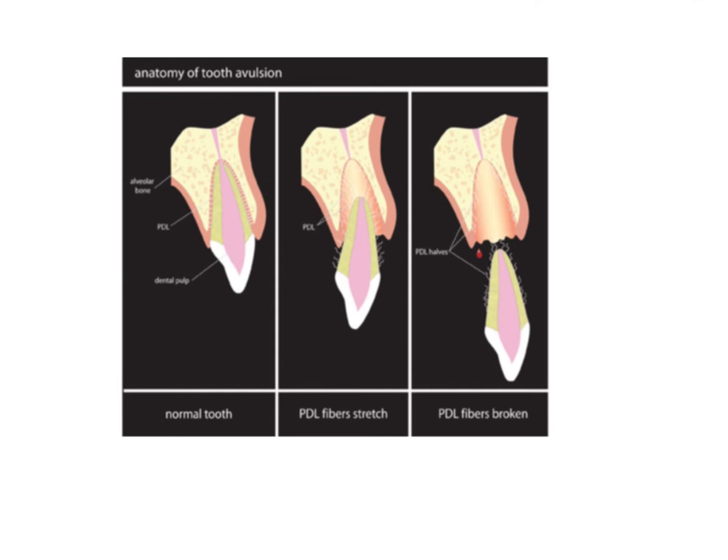If I have a tooth which has come with exarticulation or avulsion, like you can see over here, the tooth comes out because the periodontal ligament fibers have been stretched to the point that they are going to tear. So the tooth comes out.